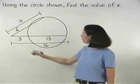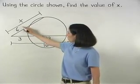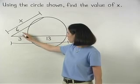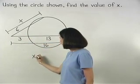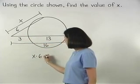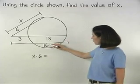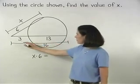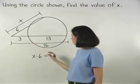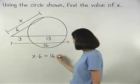So we have one full secant segment times its external segment or x times 6 is equal to the other full secant segment times its external segment or 16 times 3.